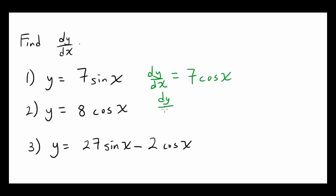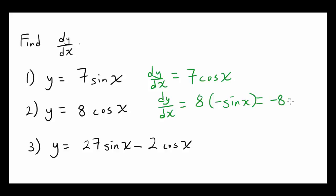The next one, dy/dx is going to be 8 times the derivative of cosine of x, which is negative sine of x. So you are going to have negative 8 times sine of x.